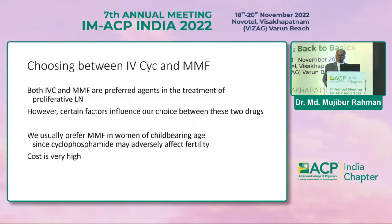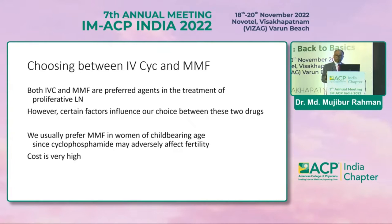Mycophenolate mofetil came into play for the treatment of lupus nephritis. Choosing between the two drugs is sometimes difficult, especially in our setting where patients must buy drugs out-of-pocket. MMF is a costly drug, while cyclophosphamide is relatively cheaper. However, the issue of ovarian failure means we have to choose between these two drugs carefully depending on the situation.